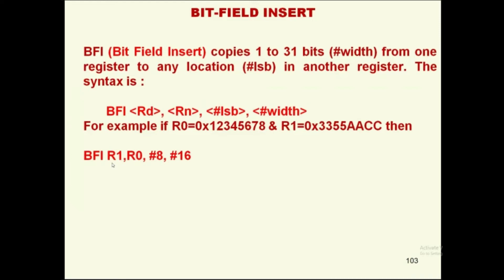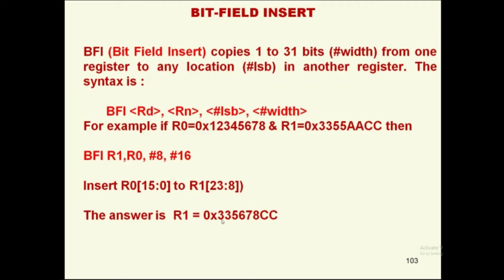In R1, from the 8th bit, those 16 bits need to be inserted. In R1 = 0x3355AACC, the 8th bit corresponds to the AA55 portion. The 16 bits from R0 (bits 0–15), which are 0x5678, replace AA55 in R1. So R1 becomes 0x335678CC — inserting R0 bits 0 to 15 into R1 bits 8 to 23.